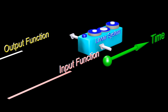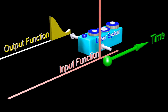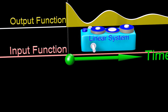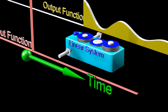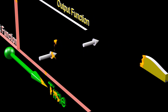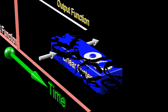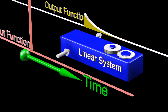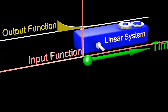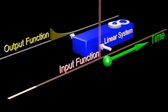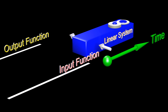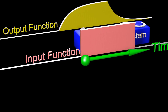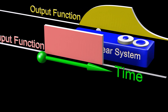Suppose we have a linear system which takes an input function and transforms it into an output function. For the exact same input, a different linear system will produce a different output. Let's now keep the system the same but try a different input function. For any given linear system, our goal is to be able to predict the output function for any possible input function.